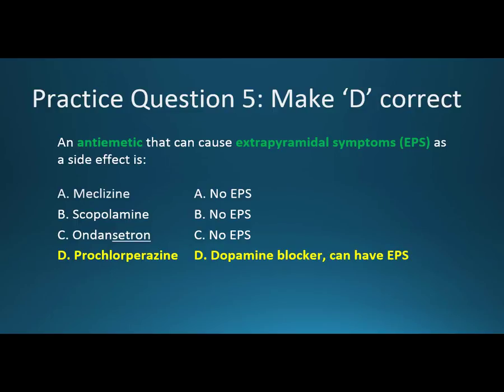There are four symptoms associated with EPS. The first is dystonia, which is tensing of the muscles in the neck or back. Akathisia is restlessness. Parkinsonism involves tremor, rigidity, or slow movement. And tardive dyskinesia is uncontrollable spasms of the face and tongue. Prochlorperazine is often used to treat nausea of unknown sources.